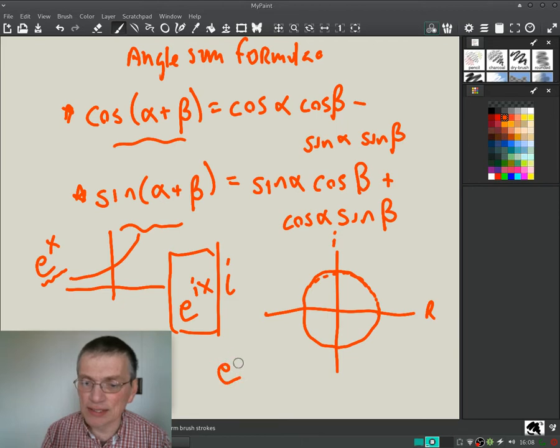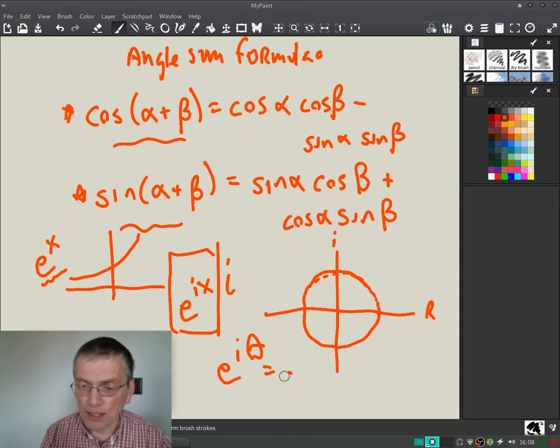This is why we usually write this e to the i theta, because it turns out this is equal to cosine theta plus i sine theta.